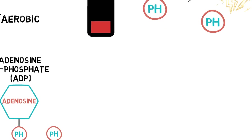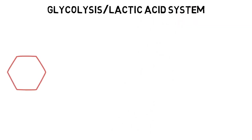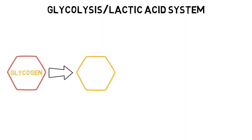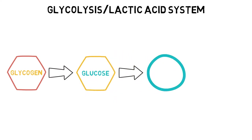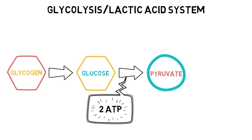Once all the stored ATP and PC has been used up, the body switches focus to a new source of energy — glycogen, which is stored in the muscles and the liver, broken down from carbohydrates that we have eaten. This process is called glycolysis and can occur anaerobically and aerobically. Glycogen gets broken down into glucose and then finally into a substance called pyruvate. This process creates about two ATP molecules and can only last approximately a couple of minutes of activity.